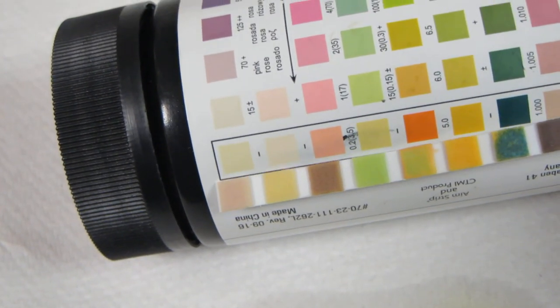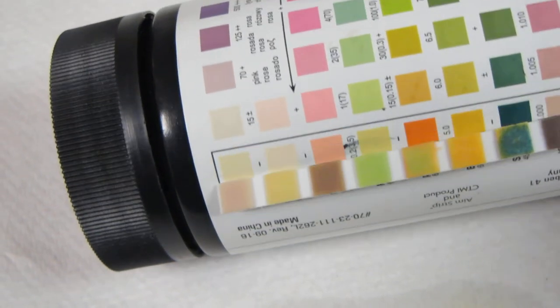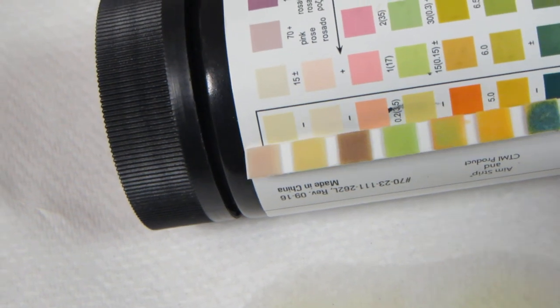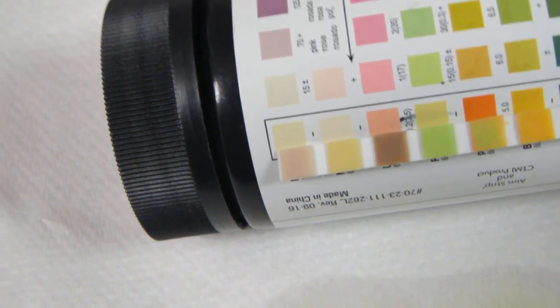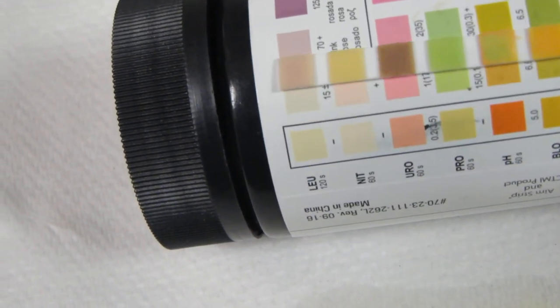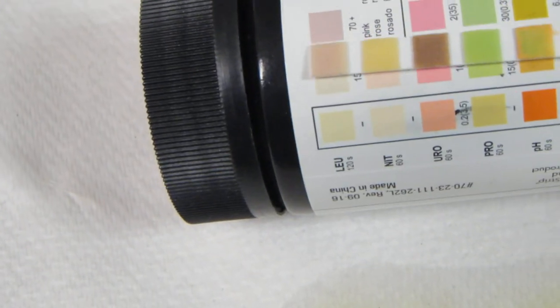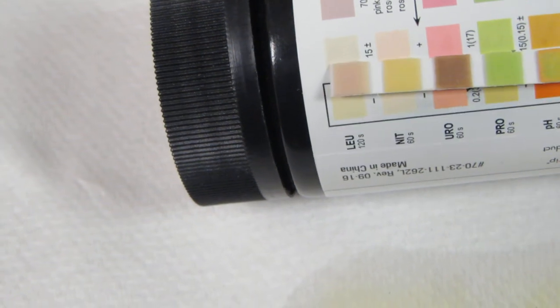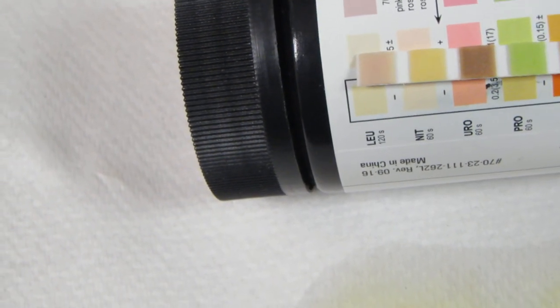pH is actually, rather, sorry, blood. Well, there's no blood in this urine. So that's great. pH is actually about six and a half protein. There is just a tiny little bit of protein here in this urine.